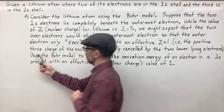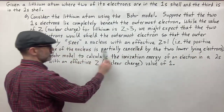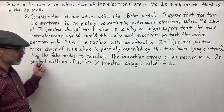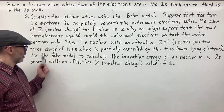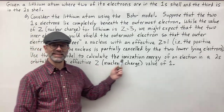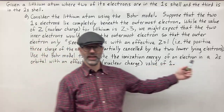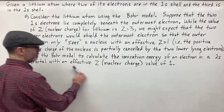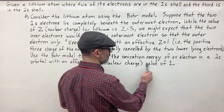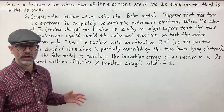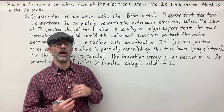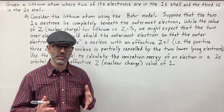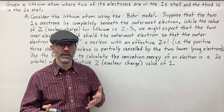The positive three charge of the nucleus is partially canceled out by the two lower-lying electrons. Finally, it says use the Bohr model to calculate the ionization energy of an electron in a 2s orbital with an effective nuclear charge Z value of one. So what do we do? We need to use the equation for the change in energy of an atom — called the Rydberg formula.